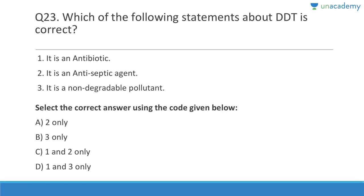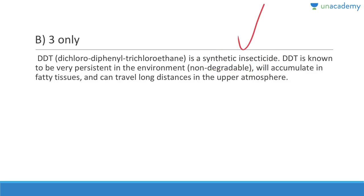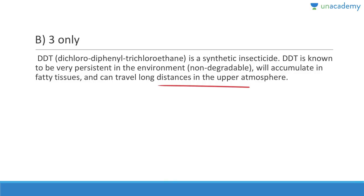Answer is B, three only. DDT is a synthetic insecticide used to kill mosquitoes. It is known to be very persistent in the environment, accumulates in fatty tissue, and can travel long distances in the upper atmosphere. Through biomagnification it can make bird eggshells brittle. Question twenty-four: Which of these relate to the tundra biome — permafrost, spongy swamps, rhododendrons? Answer is D, one, two, and three. Permafrost is the permanently frozen subsoil in the tundra region.